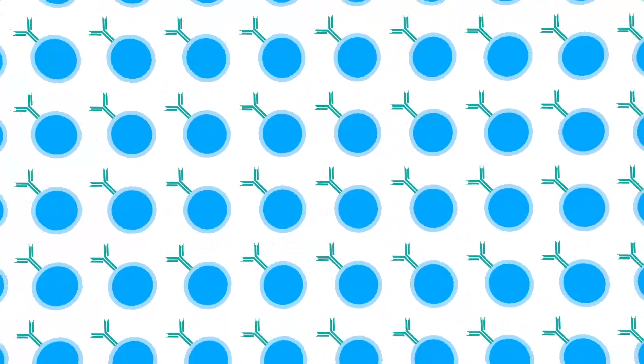Our bodies have a library of billions of white blood cells, each of which can make just one shape of antibody. Only a few of these antibodies will match the invading bacteria.